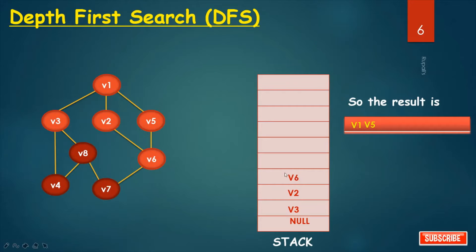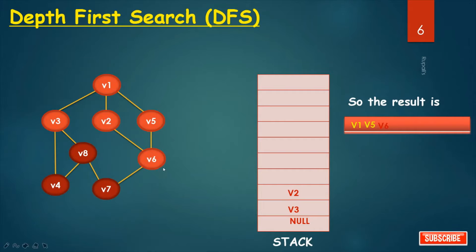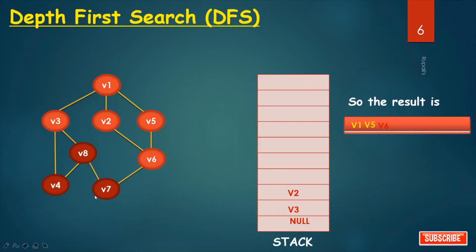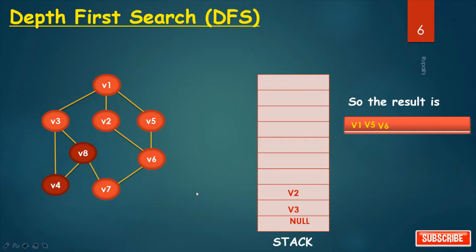Now it is time to pop. Pop V6 and print V6. Check the connected nodes of V6: they are V2, V5, and V7. V2 is in status 2. V5 is in status 3. Only V7 is in status 1, so we can push V7 into the stack.